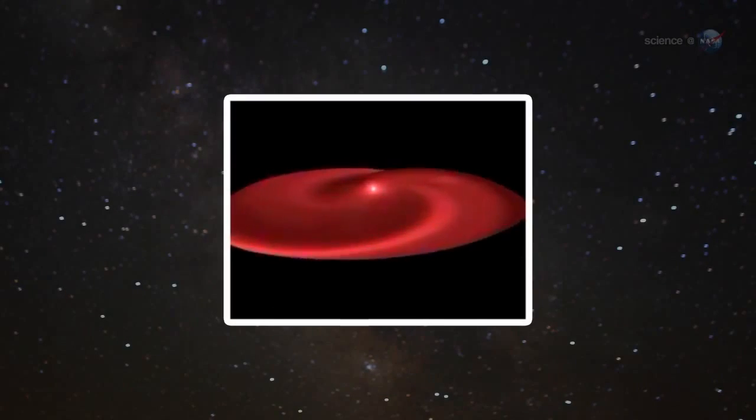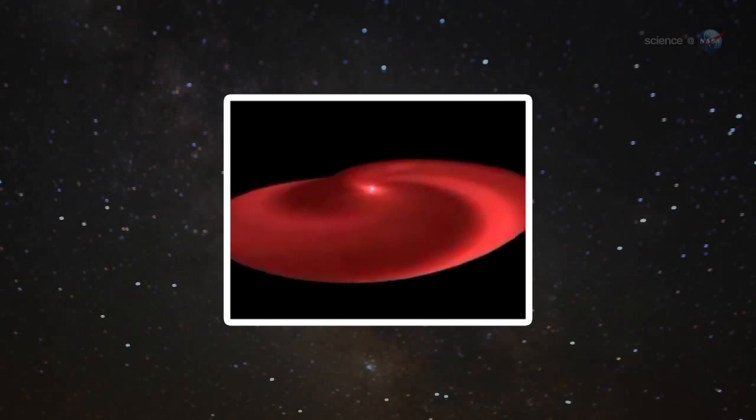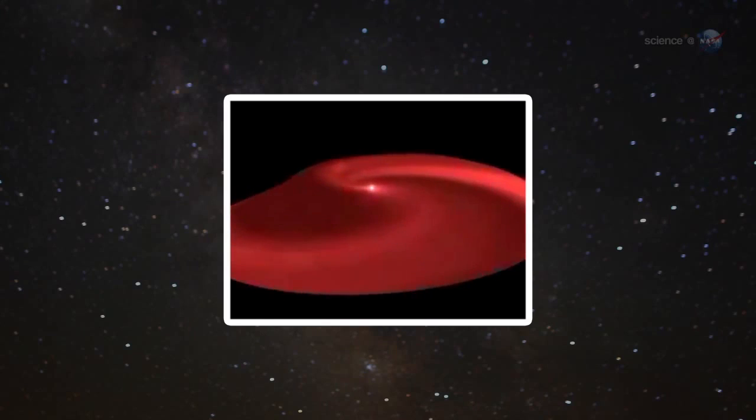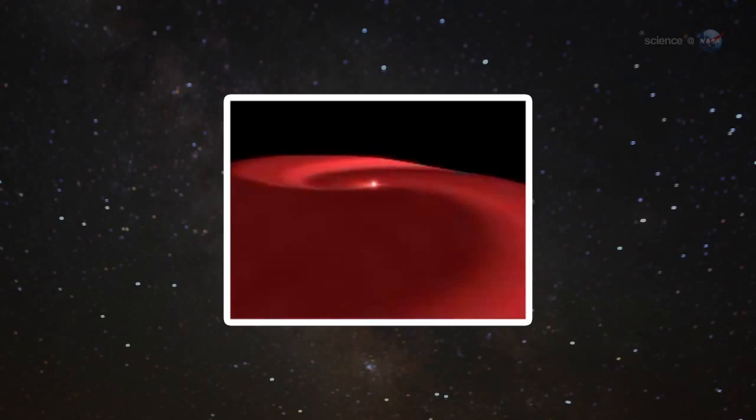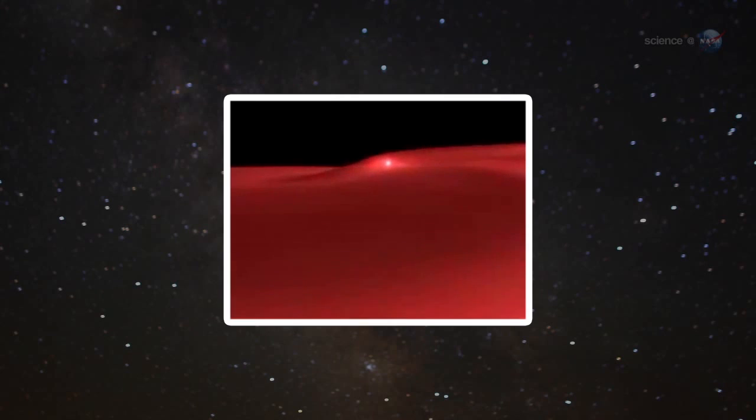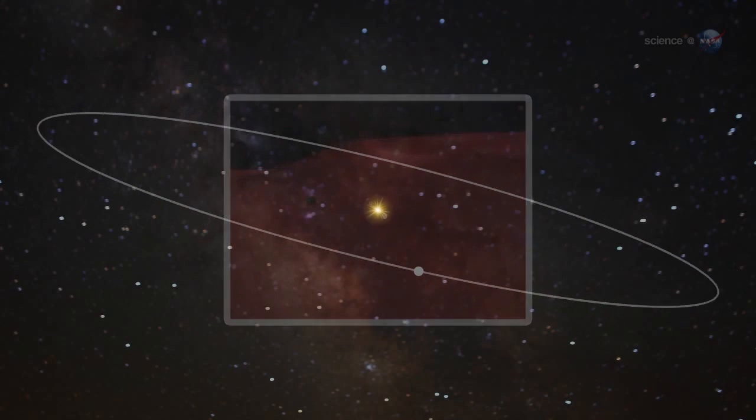When solar physicists talk about solar field reversals, their conversation often centers on the current sheet. The current sheet is a sprawling surface, jutting outward from the Sun's equator where the Sun's slowly rotating magnetic field induces an electrical current.